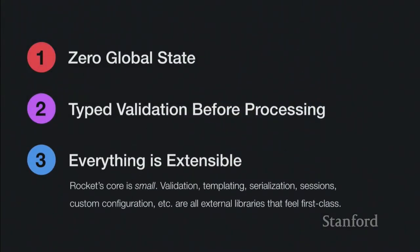Third, everything in Rocket is extensible. Rocket's core is really, really small. Validation, templating, serialization, sessions, configuration — none of this happens in Rocket's core; it happens outside. There's a canonical contrib library that includes all of these things so you don't have to write them yourself, but you could if you wanted to. And the nice thing is that all of these things feel first class — not like you're bolting in a Ruby gem from outside, but just part of the framework.